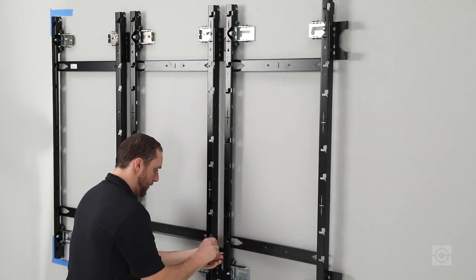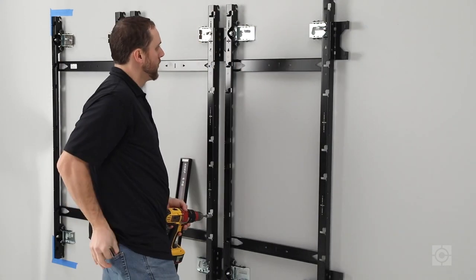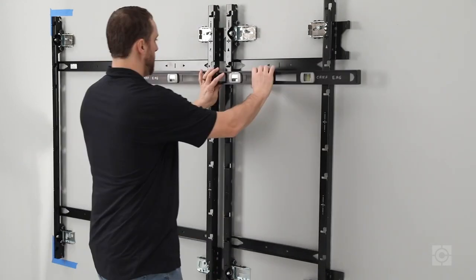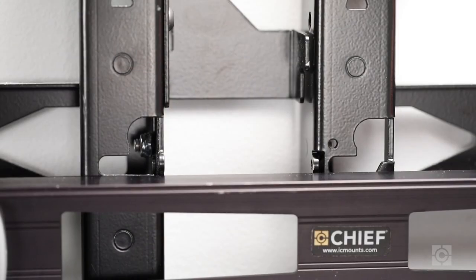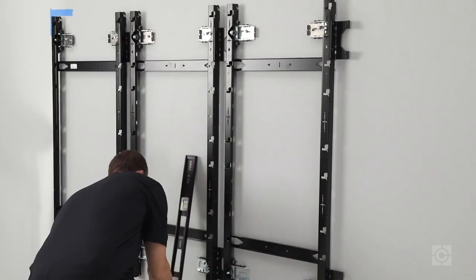Proceed by installing the remaining mounts in this manner until you have completed the entire row. Again, use the adjustments built into the design of the mount to adjust the height so that the mounting slots for the panels will be perfectly level with one another.